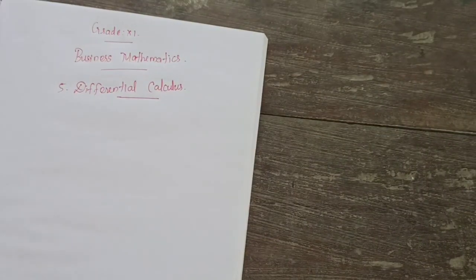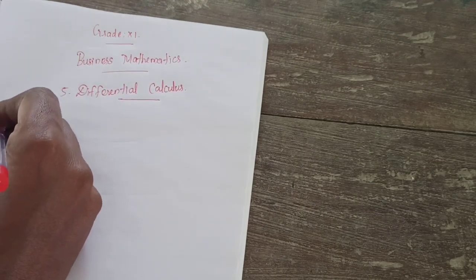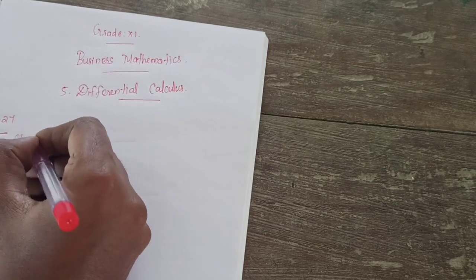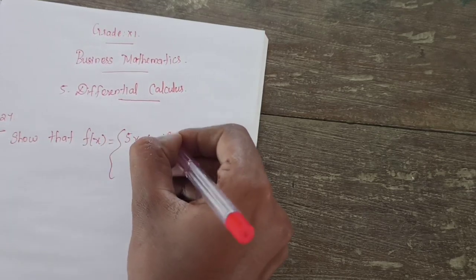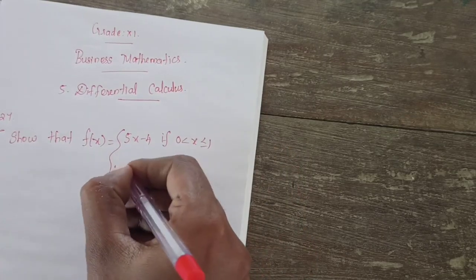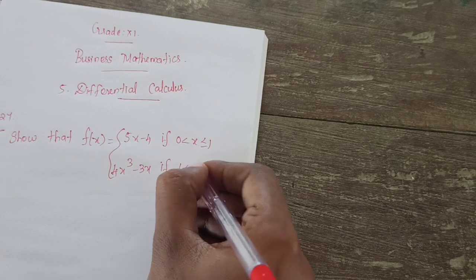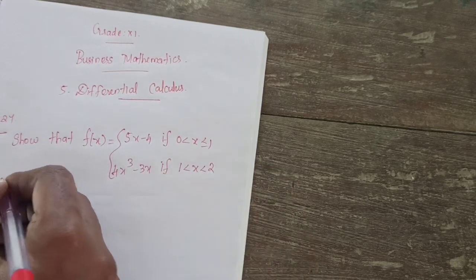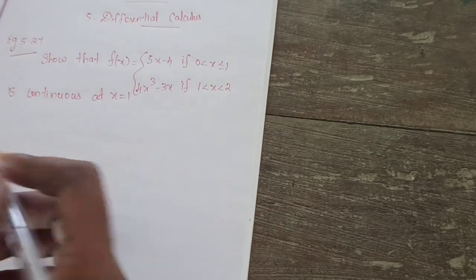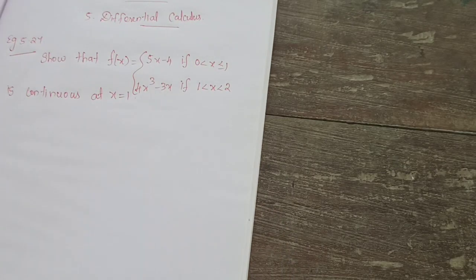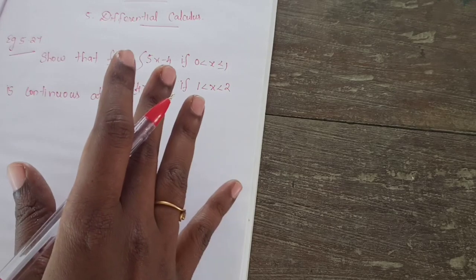Now we will move to the problem directly. We are given f of x equal to something and need to show it is continuous at x equal to 1. It is nothing but the right hand limit of f of x is equal to the left hand limit of f of x — we need to prove that at x equal to 1. If both are equal, we will say it is continuous; if not equal, we will say it is not continuous.